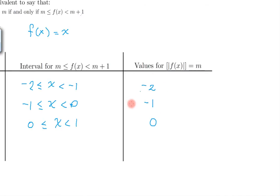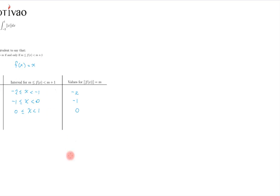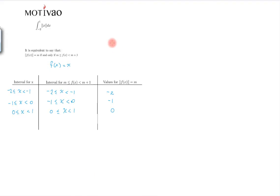Now that we have those values, these are the values that matter right now. We can translate these values into the integral. So this integral here becomes the integral from minus 2 to minus 1 of the integer function dx, plus from minus 1 to 0 of the same thing, plus 0 to 1 of the same function.